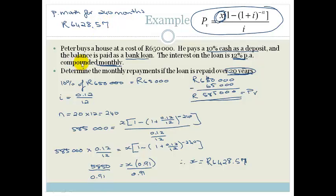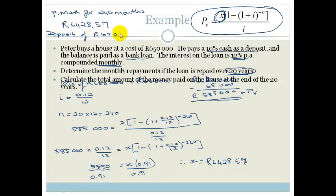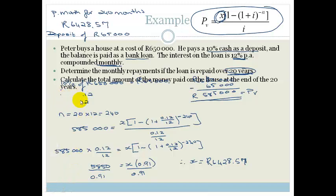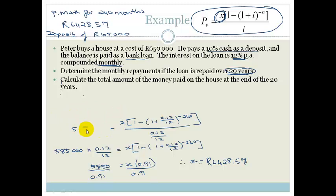Now they've asked us to calculate the total amount of money paid on the house at the end of the 20 years. Remember that he paid a deposit of 65,000 Rand. So I'm actually going to delete what we've just been working on. It's asking how much he actually paid for this. He's been paying a huge amount of interest each month for 20 years. So now we need to know how much he actually paid.